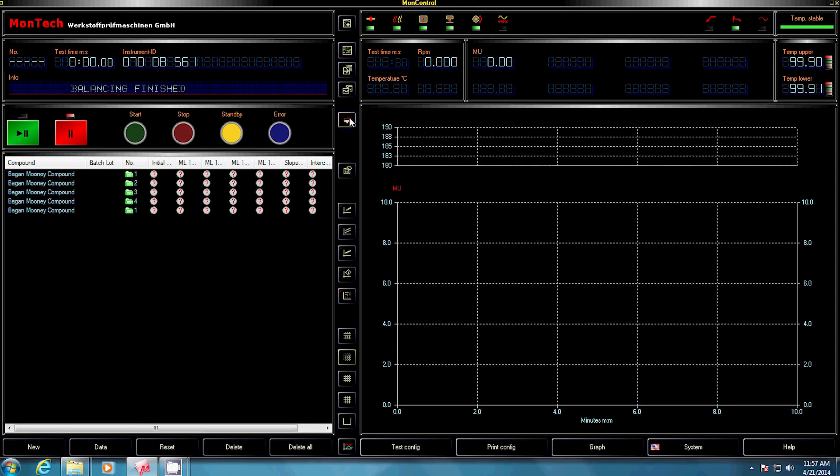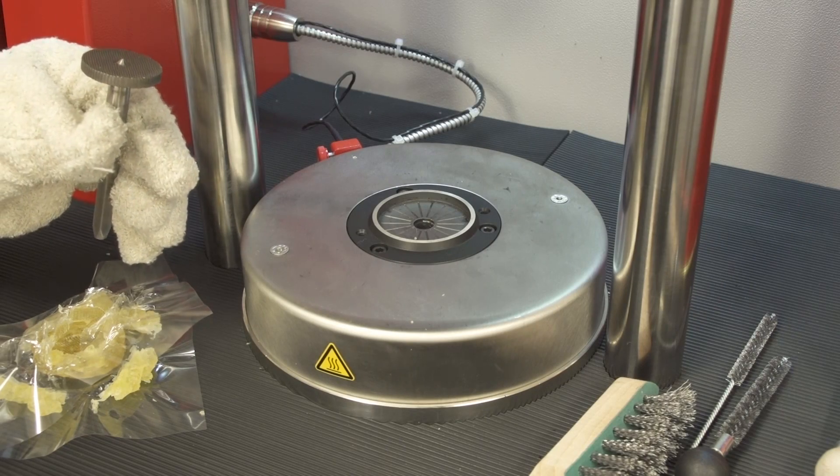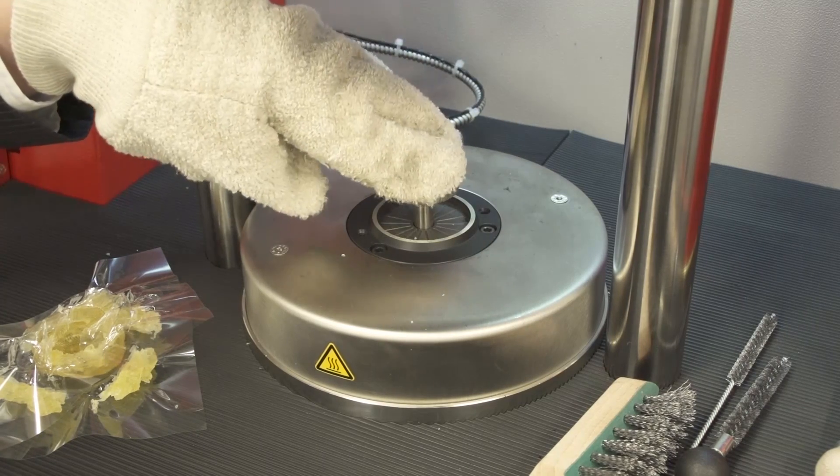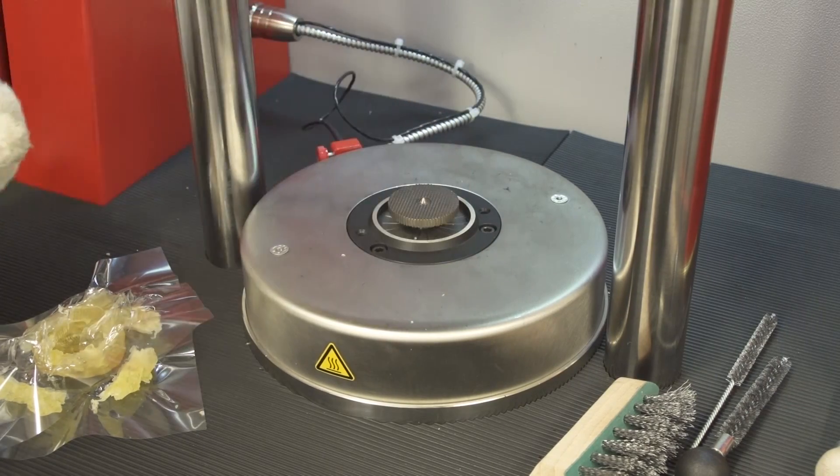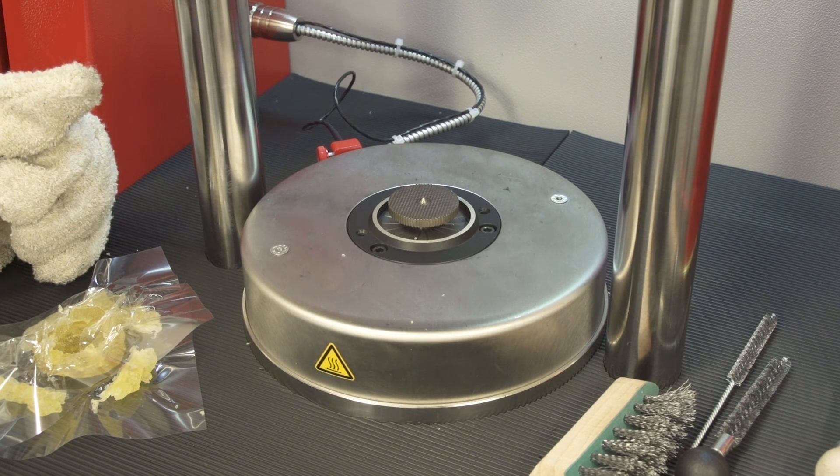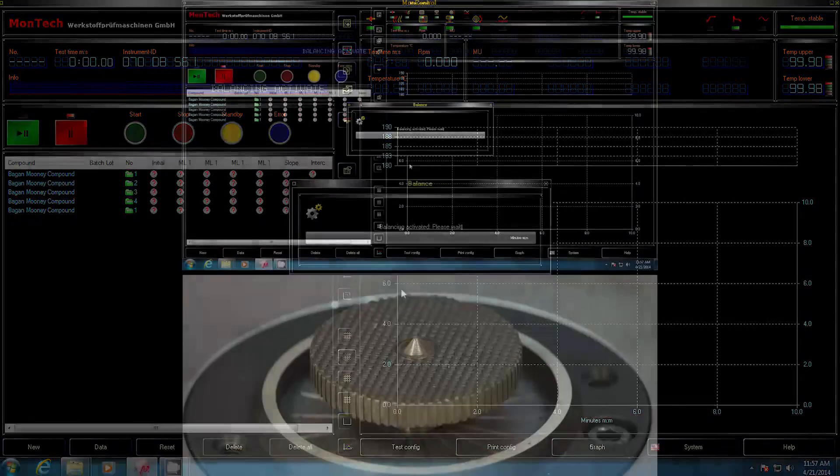To start the balancing, select the Mooney balance function, which can be found in the center of the MonoControl software. The Mooney balance is done without any material inserted. Put the rotor into the dies and make sure that there are no tools or other items and no test material in the working area. Click OK to proceed with the balancing.